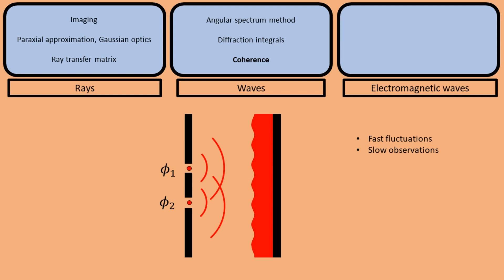How much the interference pattern moves around depends on how much the fluctuations of the fields in the two slits are correlated. If they are perfectly correlated, the position of the interference pattern is fixed, so we have a high fringe visibility. The less correlated the fluctuations are, the more the interference pattern moves around, and the lower the fringe visibility becomes. So to summarize, coherence is all about fast fluctuations, slow observations, and if there are no interference fringes, it means there is no correlation.